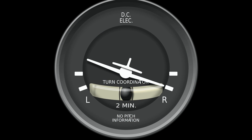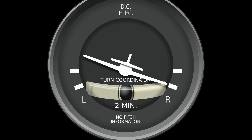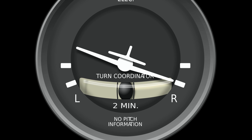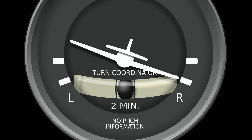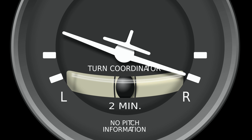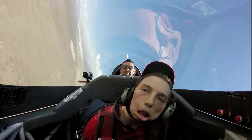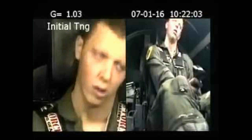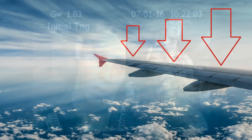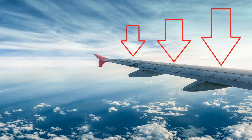Pilots use an instrument called a turn coordinator to get just the right bank for each turn. As they turn the plane, they try to keep the marble in the middle of the instrument, ensuring the passengers aren't tossed to one side of the plane. Managing G-forces isn't just about comfort though. More importantly, pilots must always make sure to never turn so fast that the G-forces become excessive. If G-forces become too great, blood can be pulled away from the brain and unconsciousness will result. If the G-forces are higher still, they can even rip the wings off a plane.